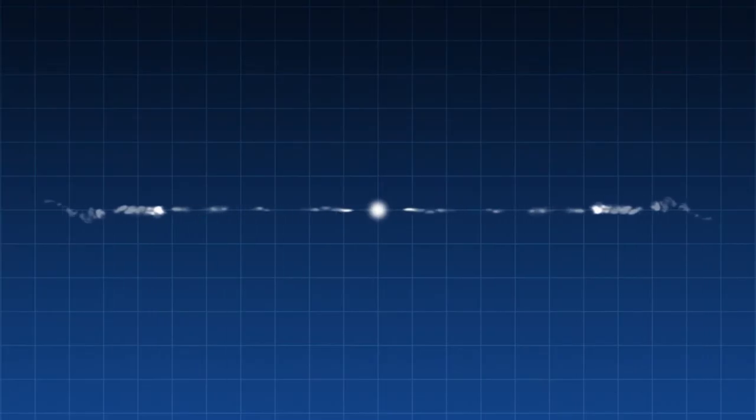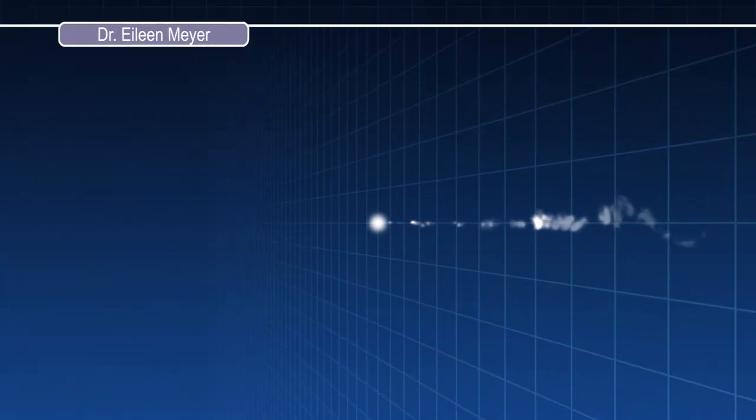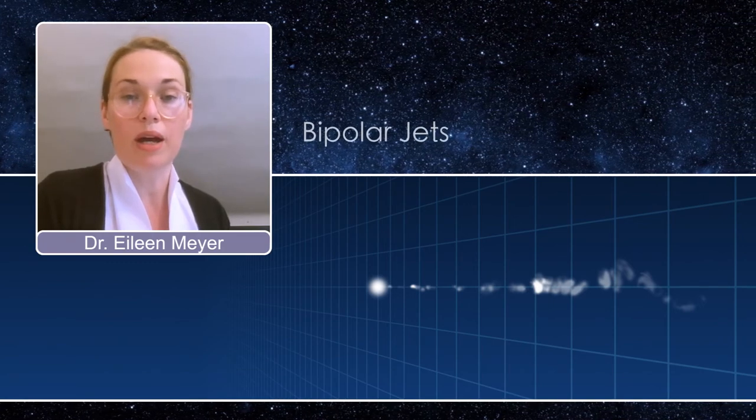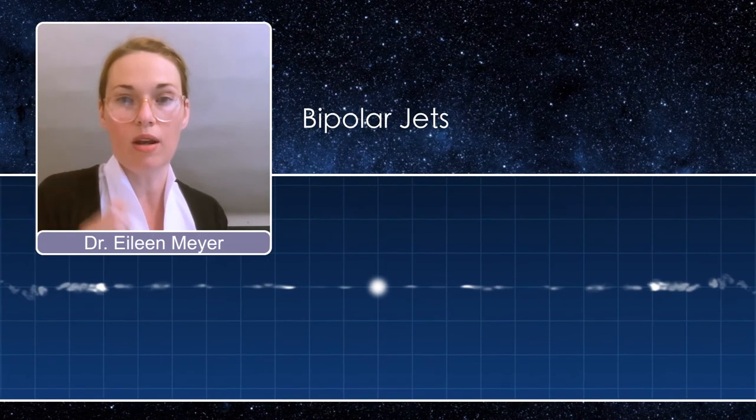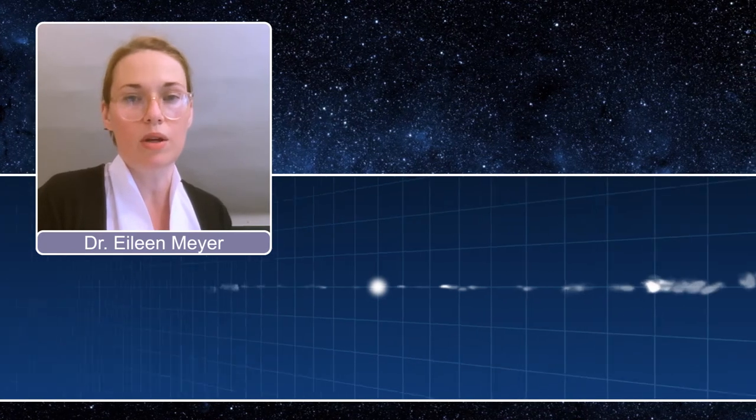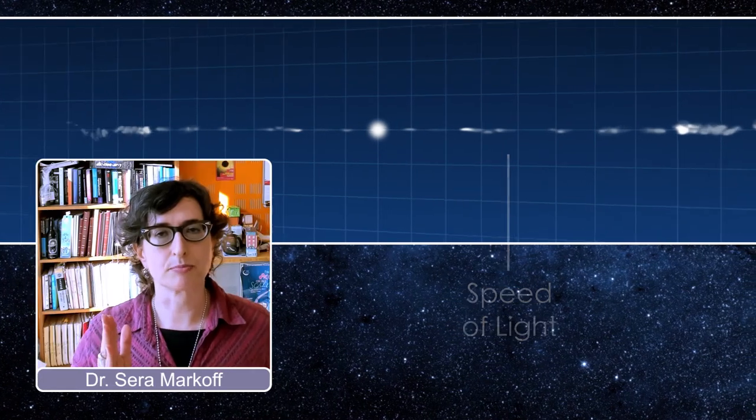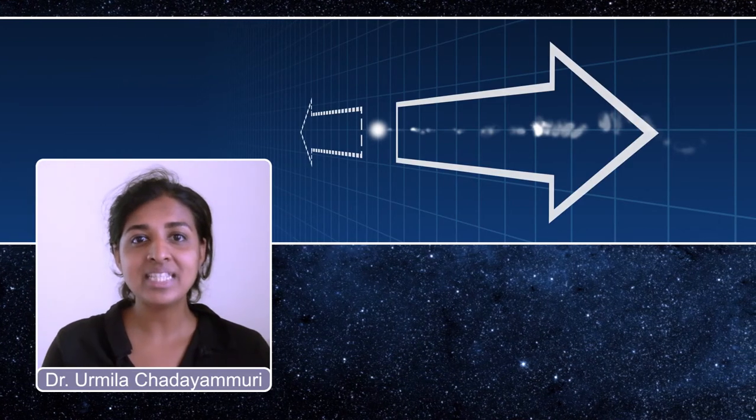The jet of M87 is coming almost directly at us. It's only offset from our line of sight by 20 degrees. We know that supermassive black holes like M87 produce bipolar jets, two jets pointed in opposite directions. But we can only see the one that's pointed towards us. And because it's moving at almost the speed of light, that means it's brighter when it's pointing towards us than away from us. We can't see the light that's moving away from us because it gets much dimmer as it moves away from us.